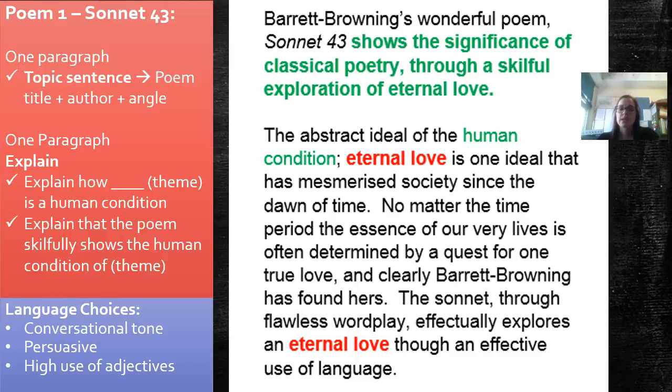We then move into an explicit analysis of each of the two texts. We start with a paragraph, which is simply a topic sentence that introduces the poem, the title, the author and the angle. We then have a second paragraph, which is our explained paragraph. We explain how the theme is a human condition and then explain that the poem skillfully shows the human condition of whatever the theme is that you identified. It's important that within your language choices, you have that conversational tone, that you are persuasive, and there are high use of adjectives.